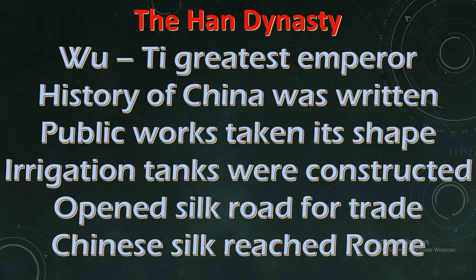Wu Ti was the one to open the Silk Road. The Silk Road paved the way for traders to enter China and also extended to other Asiatic and European countries. Chinese silk is famous throughout the world — in those days it is said that Chinese silk reached Rome as well.